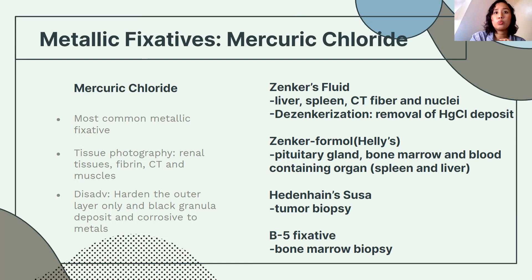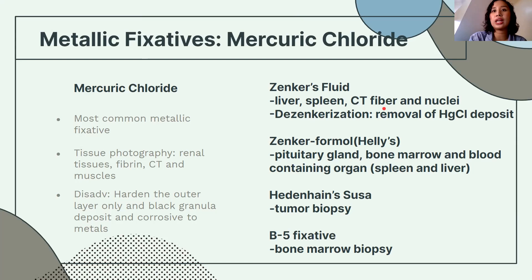Under mercuric chloride fixatives, we have Zenker's fixative — used for liver, spleen, connective tissue fibers, and nuclei. It produces a black mercuric chloride deposit, which is removed by a process called dezinckerization. We also have Zenker's formal, which preserves the pituitary gland, bone marrow, and blood-tissue-containing organs like spleen and liver.